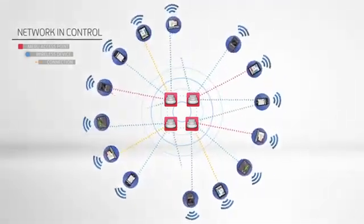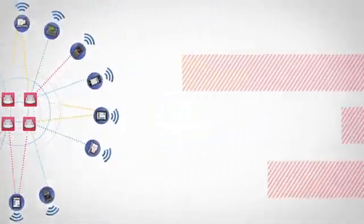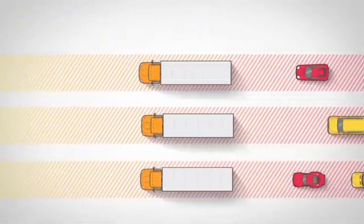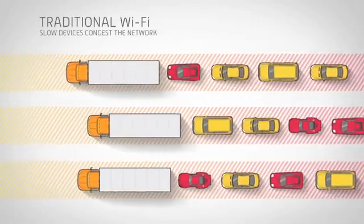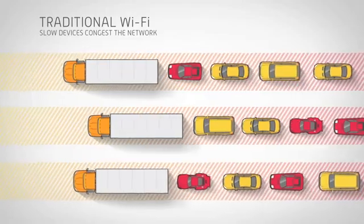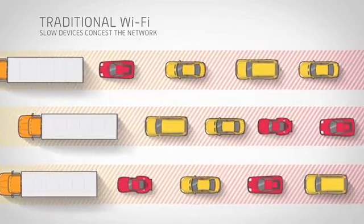Meru also offers a new way to allow each device access based on how much time it takes to communicate. Picture a three-lane highway where the slowest vehicles block the fastest ones. This is how traditional Wi-Fi networks operate. By not recognizing the differences in devices, they give equal priority to all transmissions, blocking fair access and congesting the network with traffic and delays.